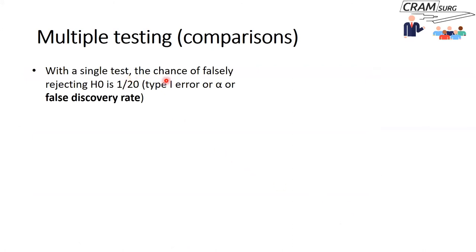If you've done a single test, the chance of falsely rejecting the null hypothesis is 1 in 20 — that's the type 1 error, or alpha. It also goes by the name the false discovery rate (FDR). In other words, you might have stumbled on a significant p-value when actually no difference exists, and therefore you're making a false discovery. Type 1 error, alpha, and FDR all refer to the same concept.